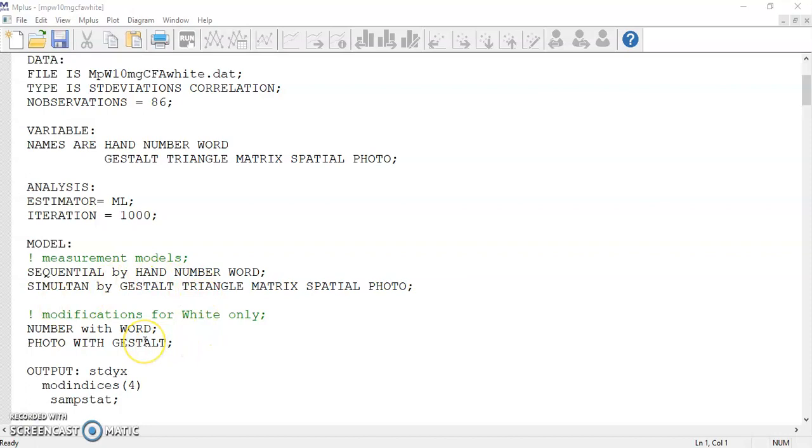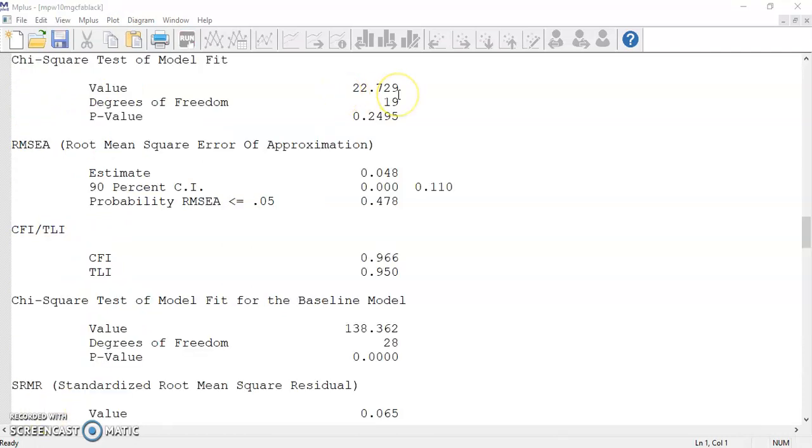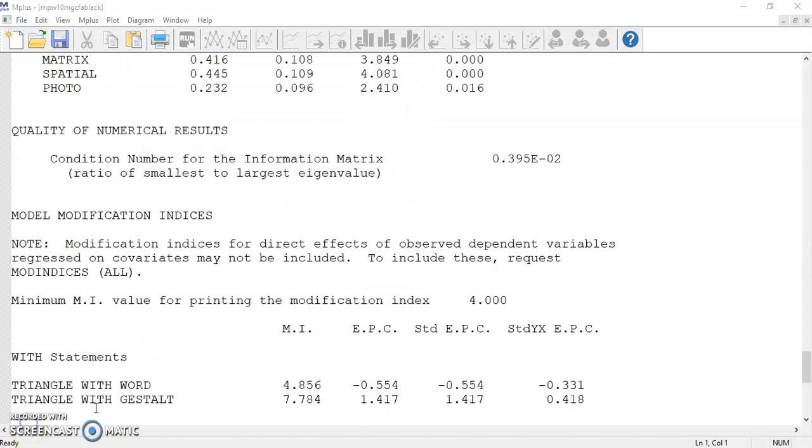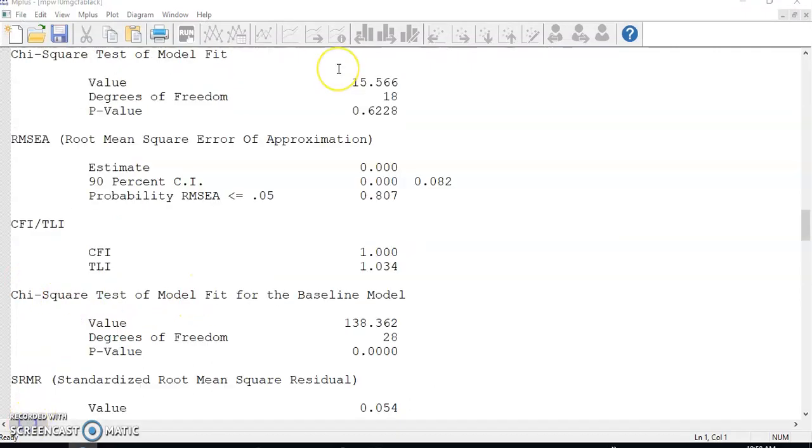Keep in mind that we got a model of good fit for the white group only after making the two changes to the model structure. Group 2 was African American children. Running this initial model, the results show that the CFA model fit black children much better than the white children. If you still want to improve the model fit, the only possible change is to add a correlation between the error terms of triangle and gestalt. This change is to the African American group only. Now we have completed the first step and made changes to the individual groups.